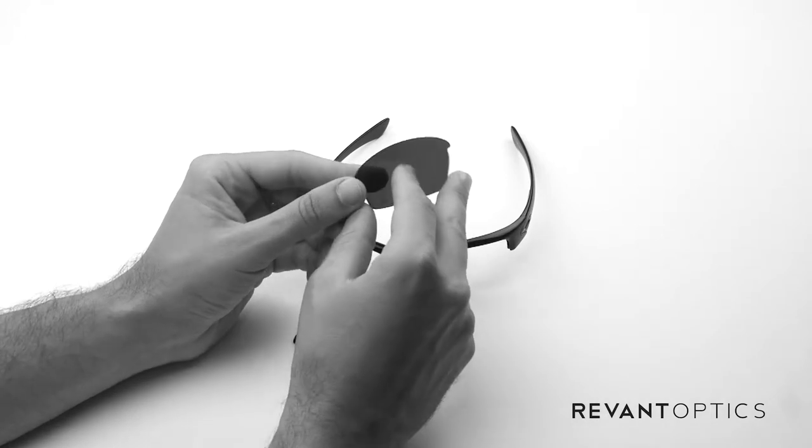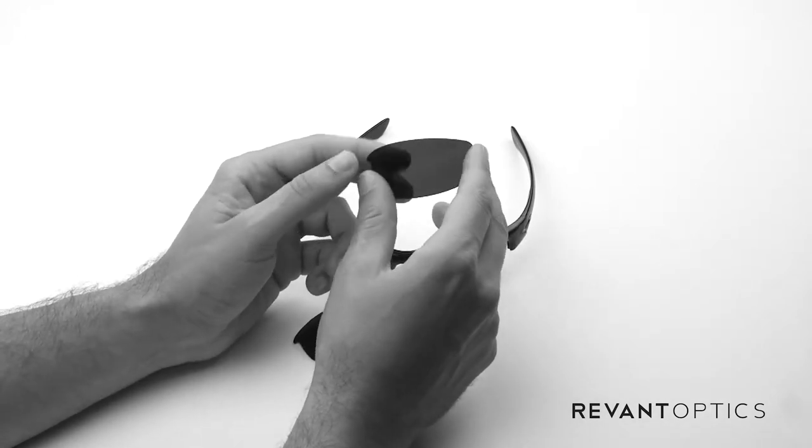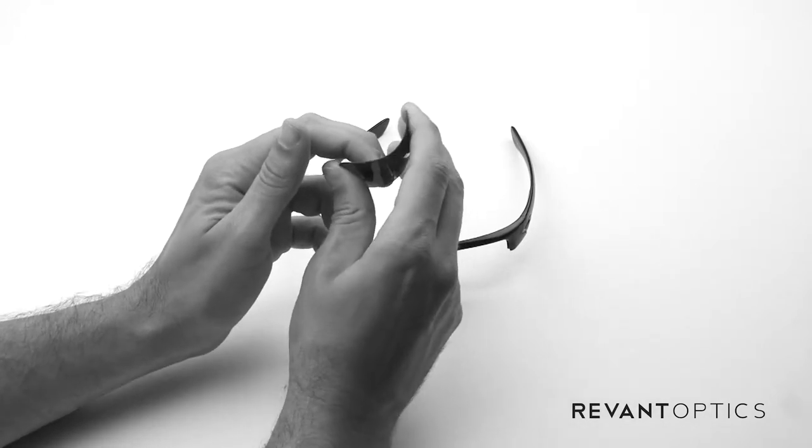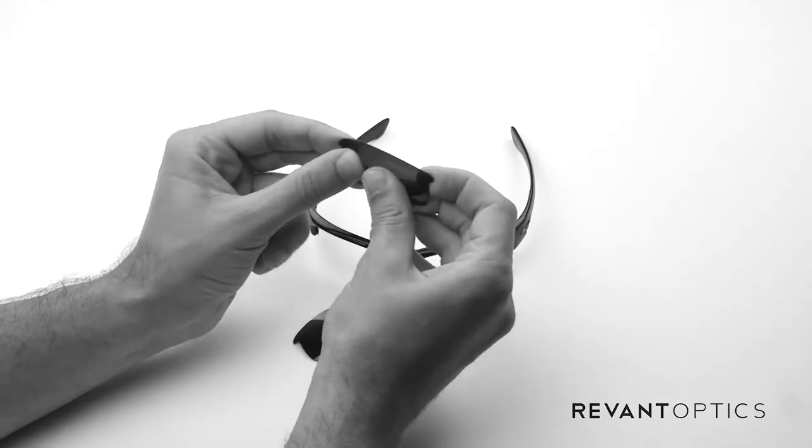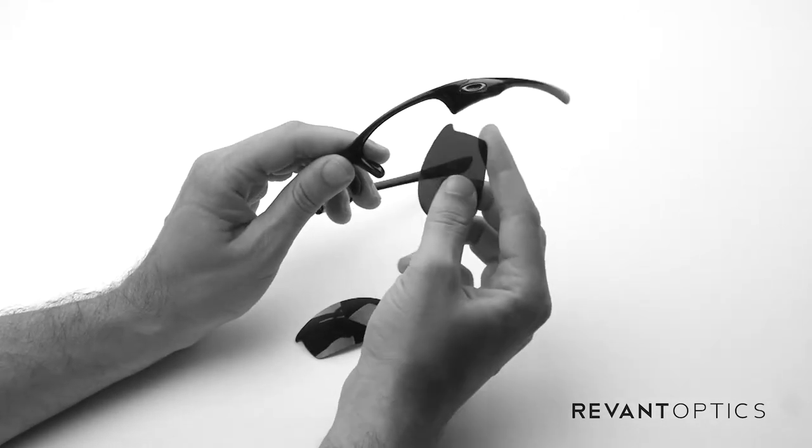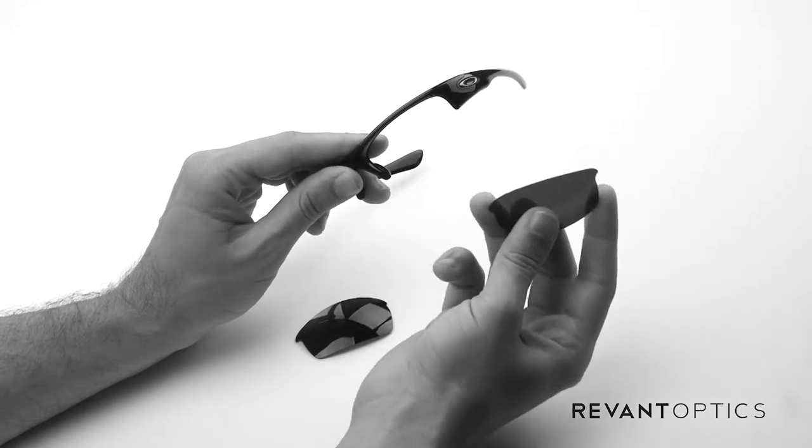These particular lenses are polarized stealth black Revant lenses, and you can see here you can bend them, they're very durable, and they'll pop right back into place. So if you do need to bend them a little bit to get them in or out of the frame, that's perfectly fine.